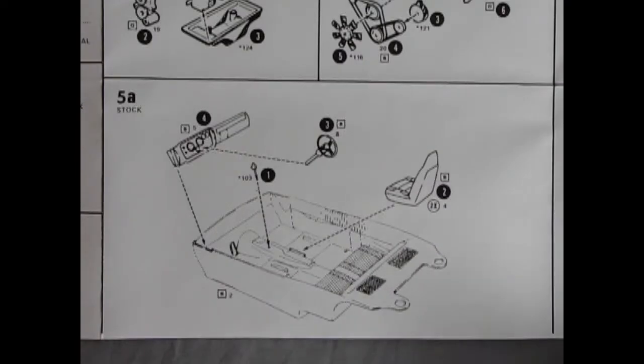Step five shows our interior tub going together. Here we have the two bucket seats going in place as well as our steering wheel, the chrome shifter and our dashboard.